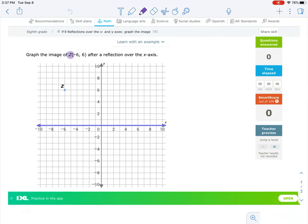So you see here we're given Z, which is located at negative 6, 6. Remember when we're plotting points we always go in the x direction first, then the y. So to get to Z we go negative 6, and then up 6.